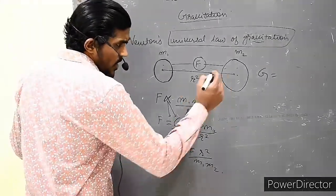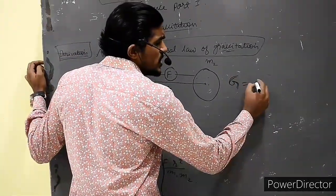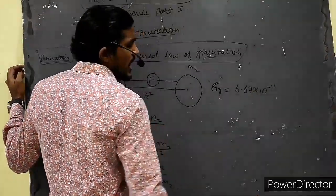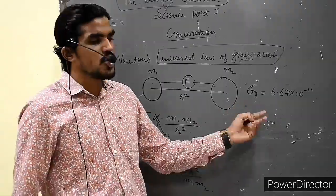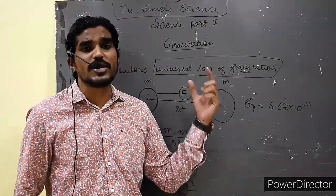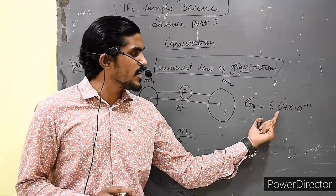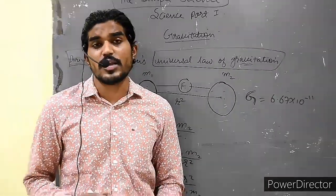Here, experimentally the value of G is known as 6.67 into 10 raise to minus 11. You can calculate the value of G. The value of G is always the same throughout the universe and this value will be 6.67 into 10 raise to minus 11.